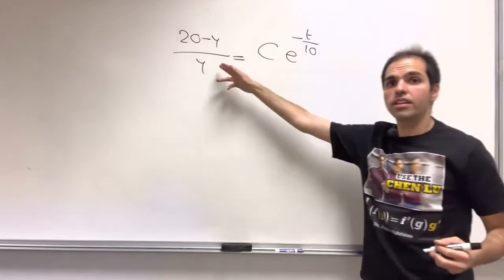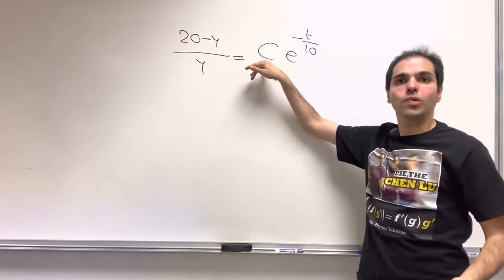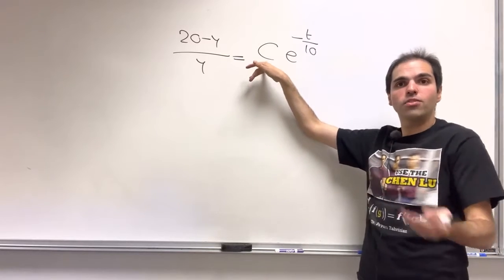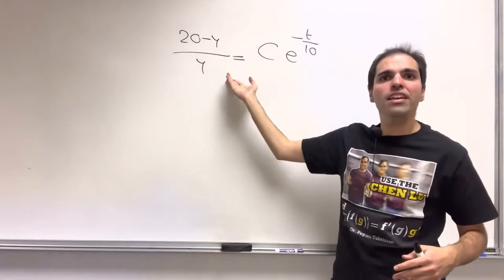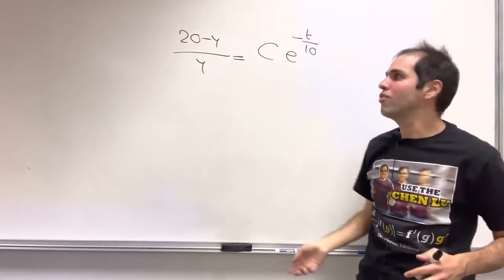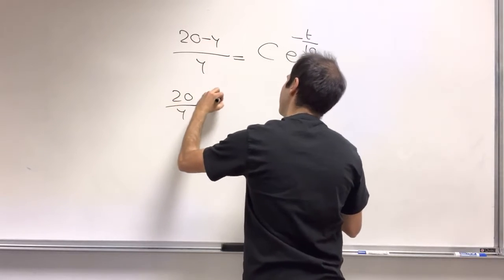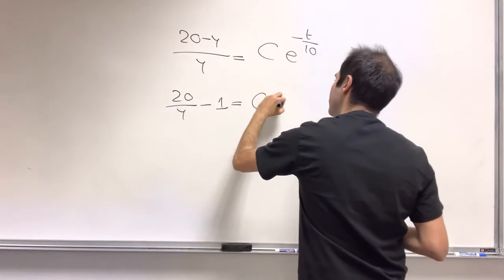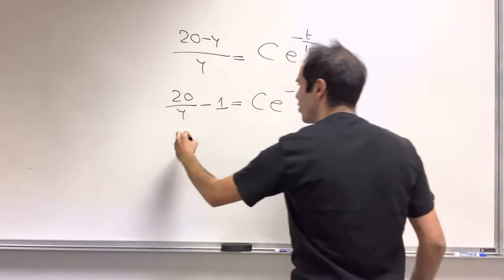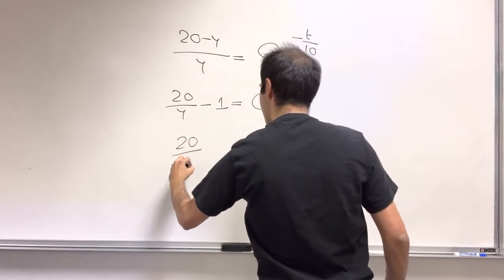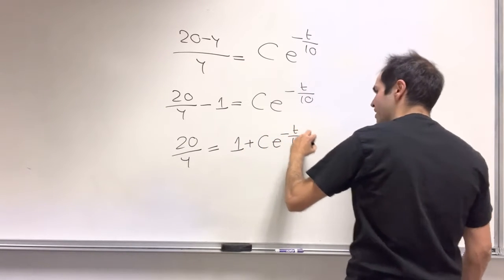So what I said, you get 20 minus y over y equals, again, an arbitrary constant. I replace 1 over c by c, e to the minus t over 10. And the cool thing is, with this, we can solve for y. So 20 over y minus 1 equals c e to the minus t over 10. And then you get 20 over y equals 1 plus c e to the minus t over 10.